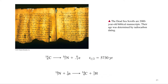How old is the Earth? How long ago did Earth form from the remnants of a supernova? It's about 4.54 billion years old. So 5,730 years seems old to us, but compared to the age of the Earth, that is a relatively short amount of time.